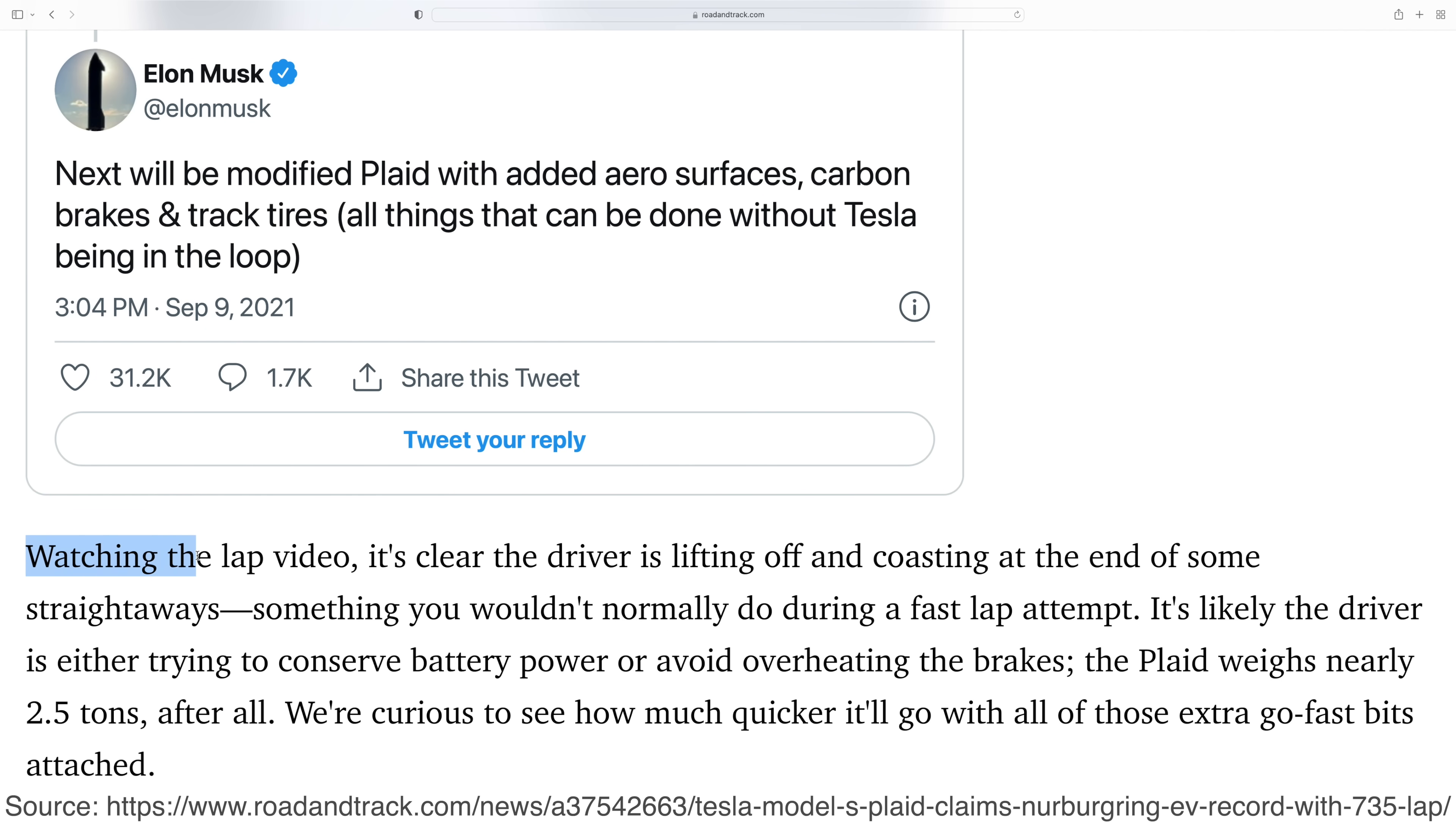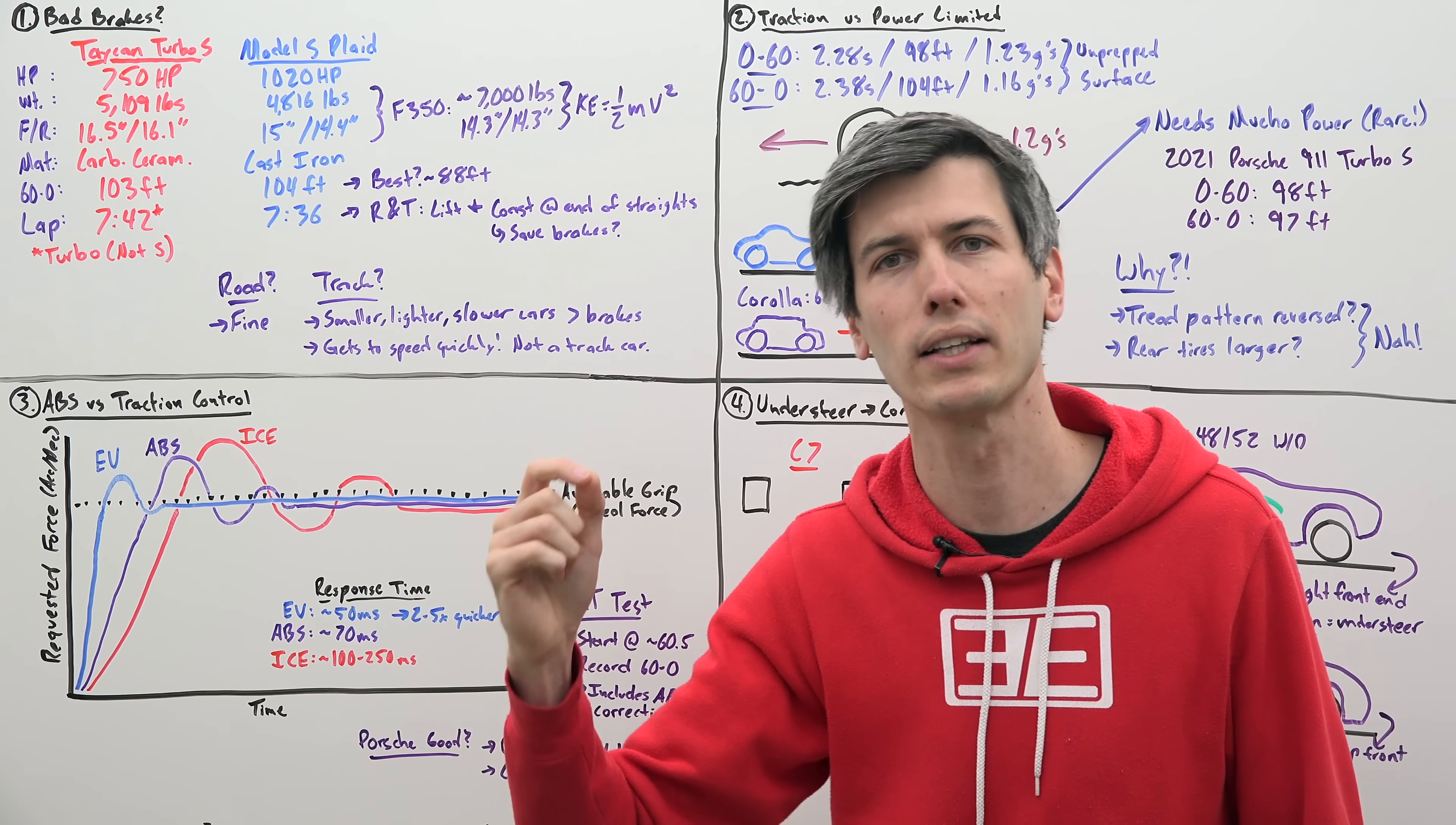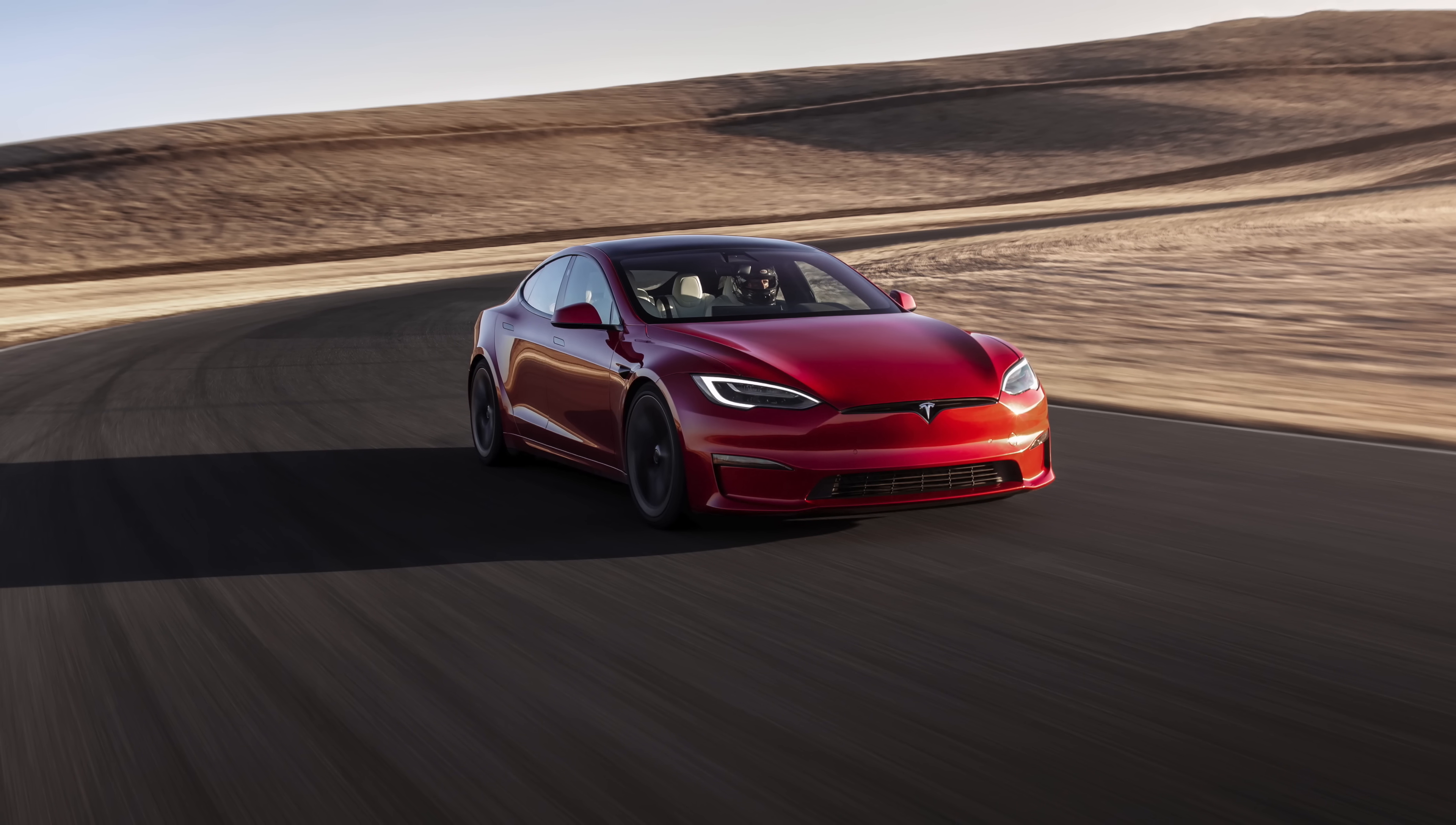One of the things Road and Track pointed out is that they are lifting and coasting at some of the ends of those long straights. So why would you lift and coast at the end of a long straight if you're trying to set the fastest time possible? Not a great idea but perhaps it is being done to save those brakes. There could be other reasons relating to the battery but perhaps it is underbraked and that's why they're doing it. So for the track would I say that these are phenomenal track brakes? No I definitely wouldn't. You can find smaller lighter slower cars that are using much larger brakes on them. The big problem with the Model S Plaid brakes is that it has so much power. It's able to get up to speed really quickly, then you have all this mass, all this energy, and you have to put it somewhere. If you keep cycling that, that's a ton of energy going into those brakes and they're not that big in comparison to some other vehicles out there. So underbraked for the track, yeah I would probably say so. That said I don't necessarily think this is a track car.